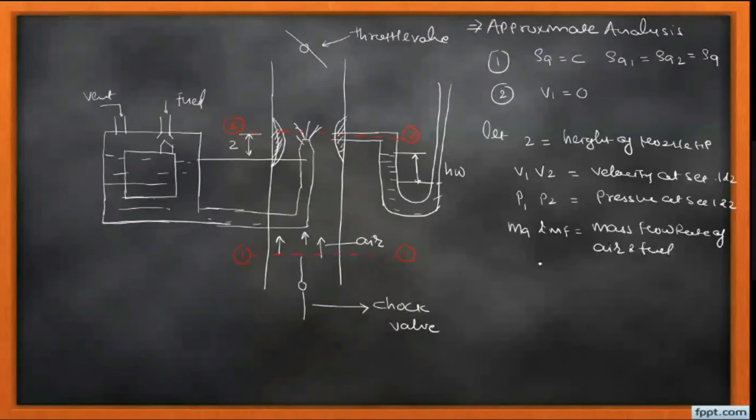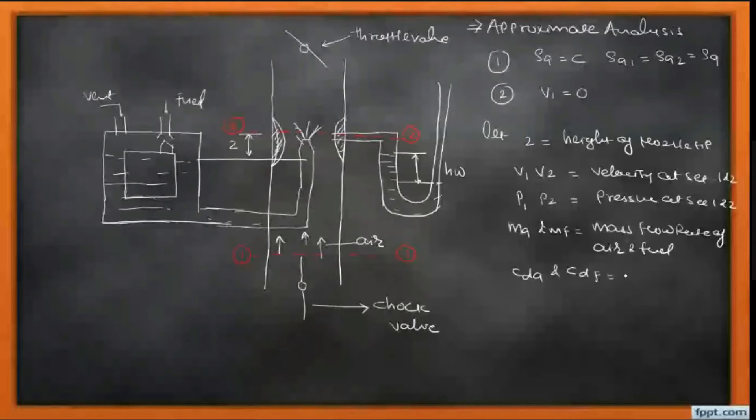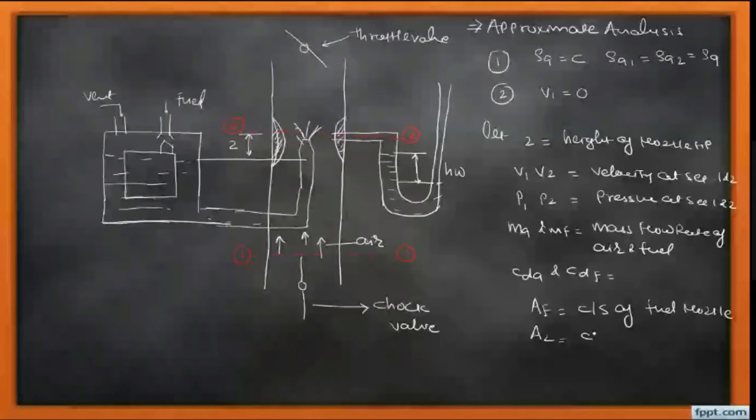Then CDA and CDF are the coefficients of discharge of venturi for air and fuel. AF is the cross-sectional area of fuel nozzle. A2 is the cross-sectional area of venturi at throat. D is the diameter of venturi at throat. G is the gravitational acceleration.